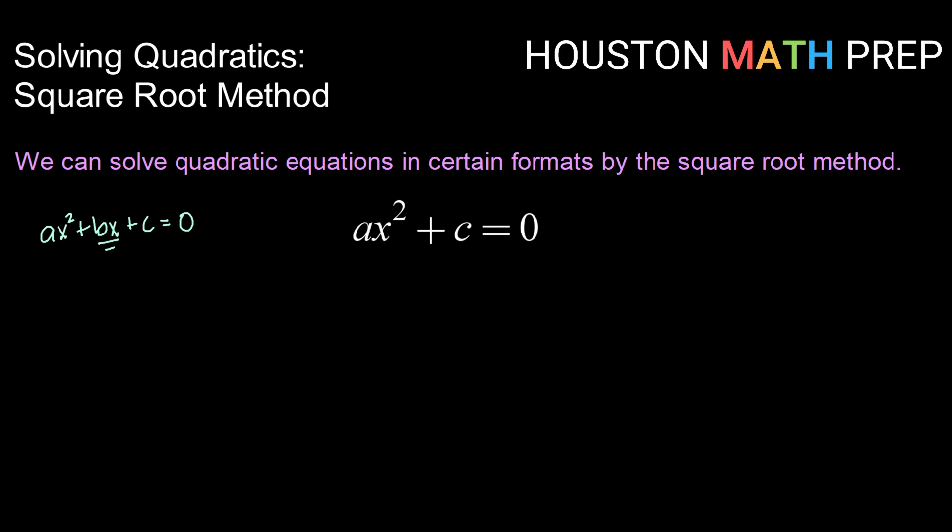Now we can use the square root method to solve quadratics that are missing the bx term. So if they just have ax squared plus c equals zero, we can isolate the x squared on one side of the equal sign and use the square root method. Let's look at some examples of how that works.